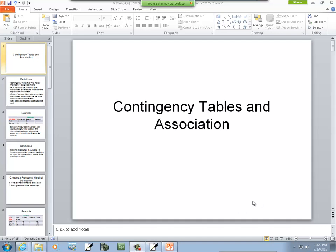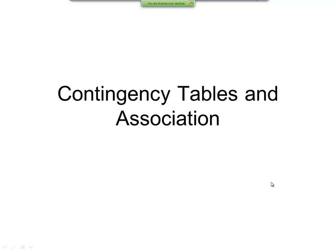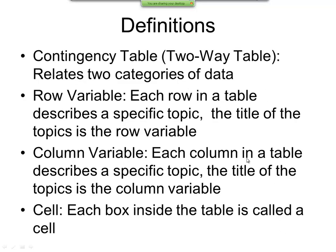Now this is contingency tables and association. Now we've got some definitions. A contingency table, or two-way table, relates two categories of data.